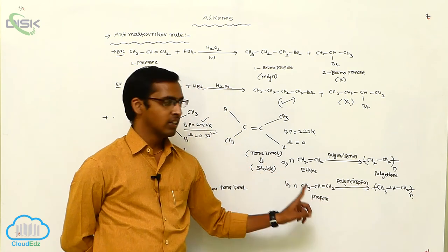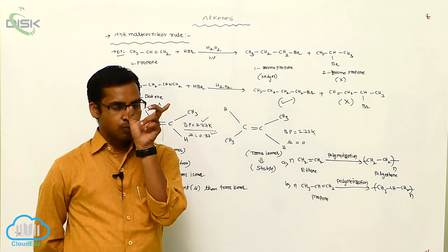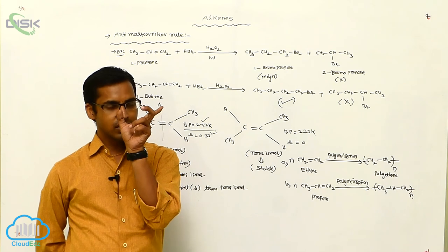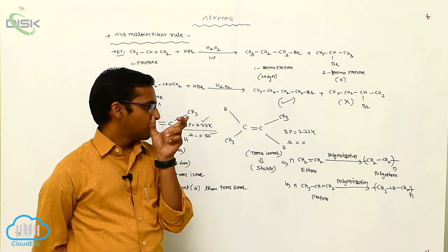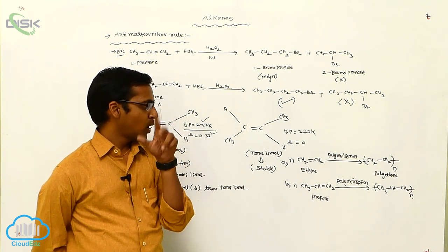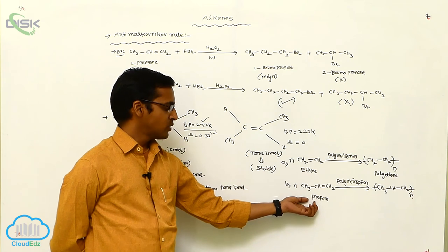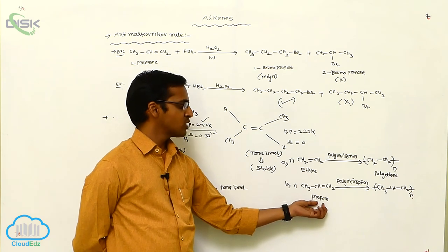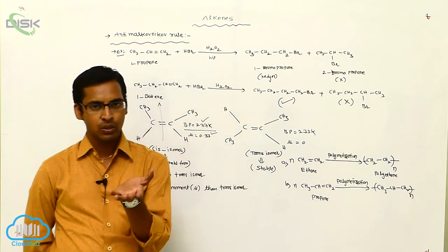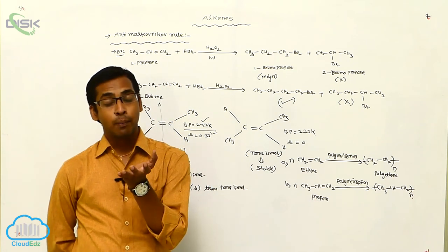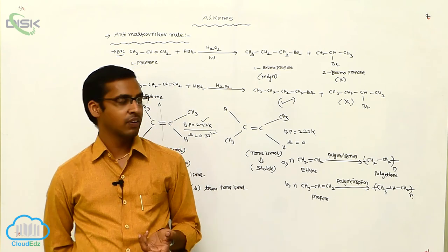The single unit is called the monomer. The preparation of polymers from a single monomer unit — the monomer has less molecular weight, while the polymer has more molecular weight.